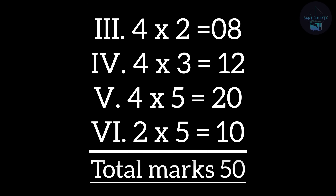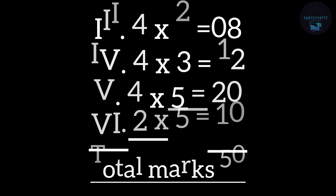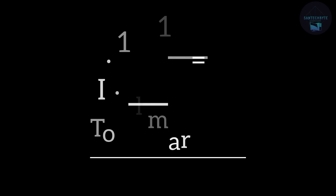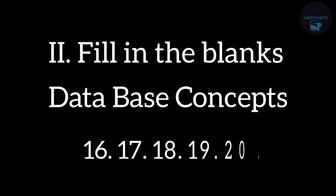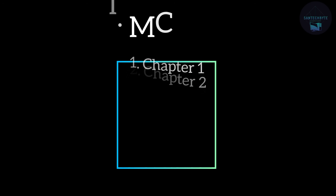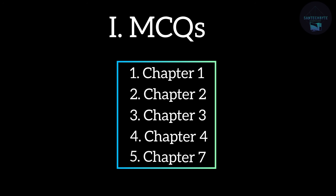The remaining 20 marks come from 15 MCQs and 5 fill-in-the-blanks. Your 5 fill-in-the-blanks will be completely from one chapter — Database Concepts. For the 15 MCQs: MCQ 1 from Chapter 1, MCQ 2 from Chapter 2, MCQ 3 from Logic Gates — they may give a gate and ask the output or ask you to identify the gate. MCQ 4 is from Chapter 4, Data Structures.